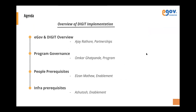Today's session will focus on four key aspects. I'm part of the partnerships team and look after technology partnerships at eGov — I'll give you an eGov and Digit overview. Omkar, from our program team, will give a program governance overview. Alzan, from our enablement team, will walk you through people prerequisites for rolling out a Digit implementation. And we'll be looking at introductory requisites from Ashutosh. Please put any questions in the chat box or Q&A.